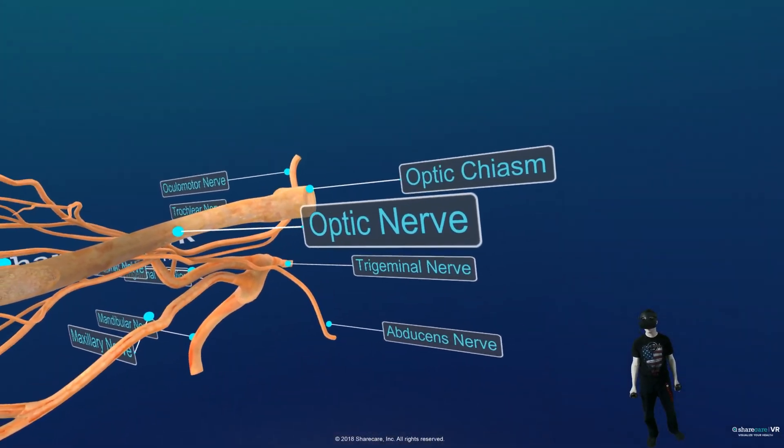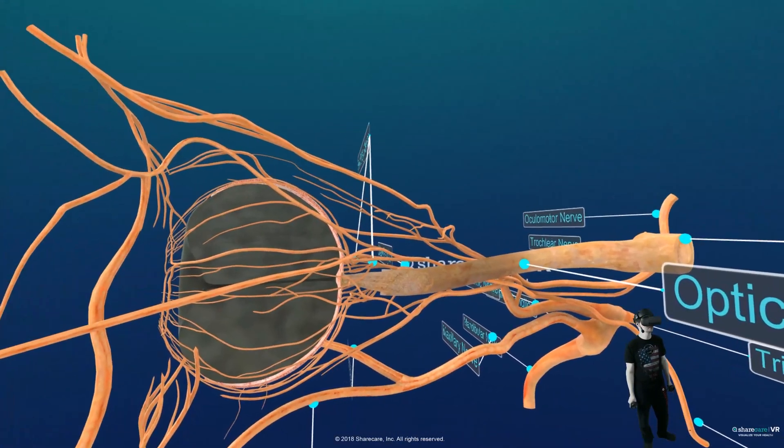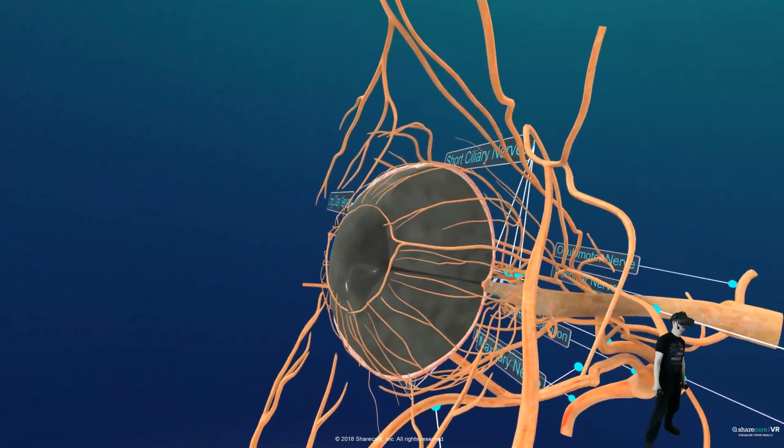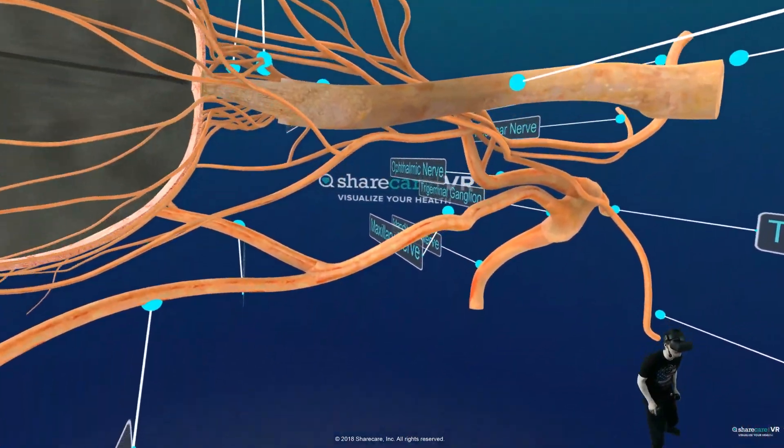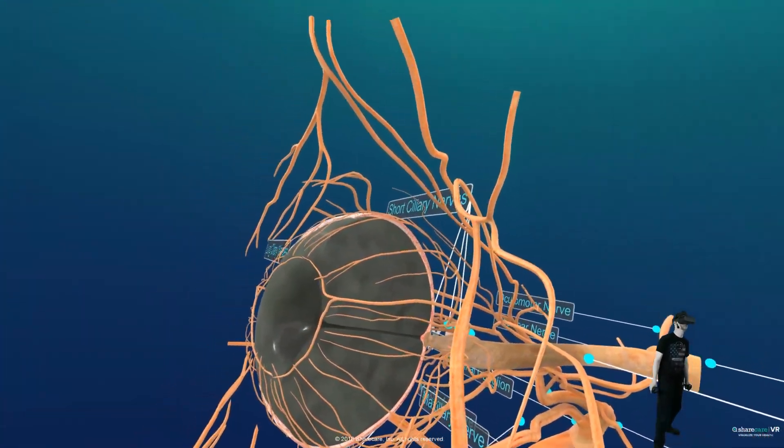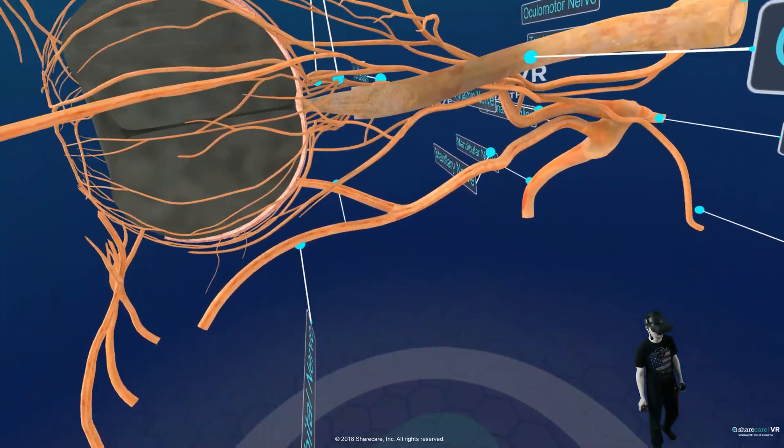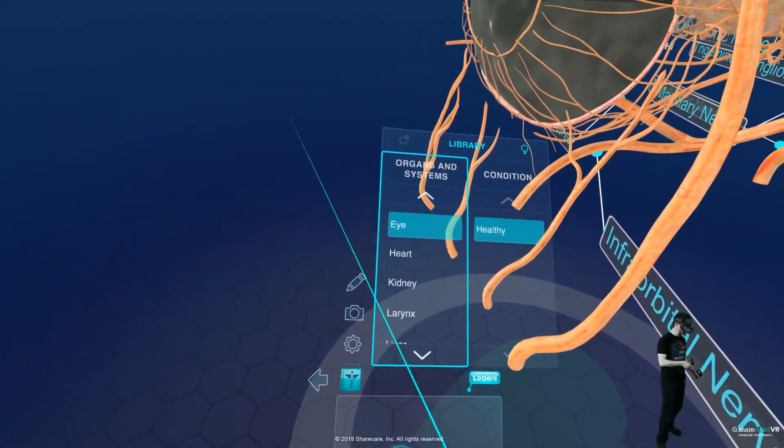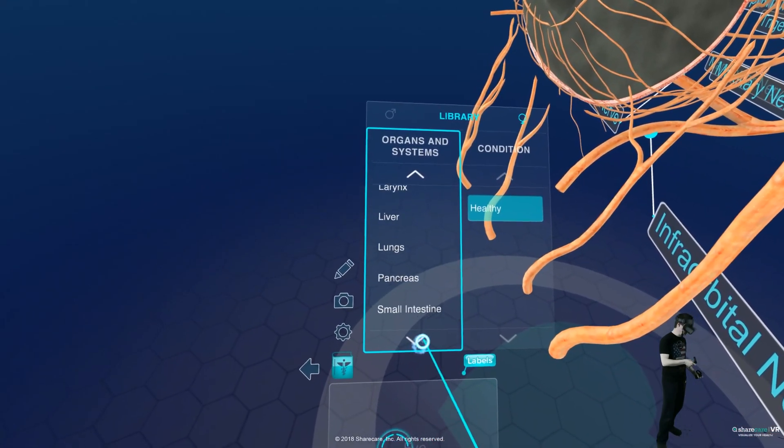Abducens nerve, optic nerve, optic chiasm. Oh yes. Wow. That's really cool. Yeah, we can learn so much stuff here. Look at this.